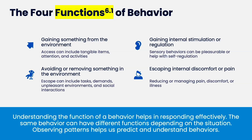The second one falls within negative reinforcement — it's avoiding anything within the environment: escaping a tangible, attention, or activity. All things in the environment should be in both the escape and access functions. Most people think of escape as escaping demands or an unpleasant environment, but they don't think about escaping attention. They could be escaping attention or engaging in behavior to escape social attention.